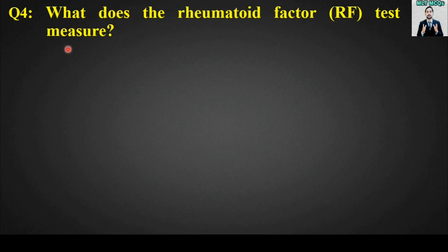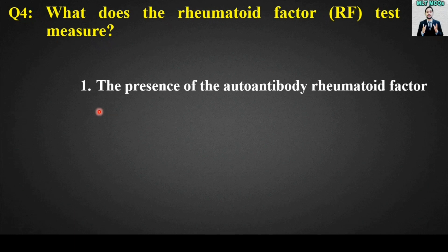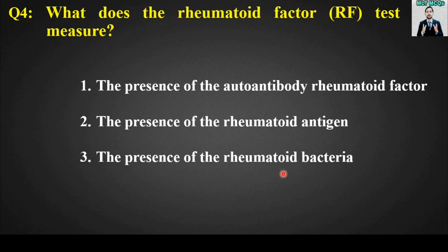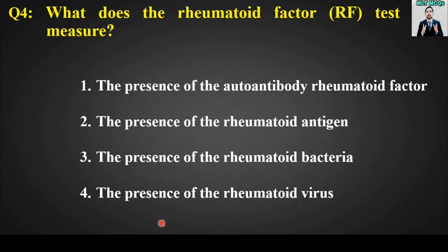MCQ number 4: What does the rheumatoid factor (RF) test measure? Options are: the presence of the autoantibody rheumatoid factor, the presence of the rheumatoid antigen, the presence of the rheumatoid bacteria, or the presence of the rheumatoid. The right answer is option number 1 — the presence of the autoantibody rheumatoid factor.